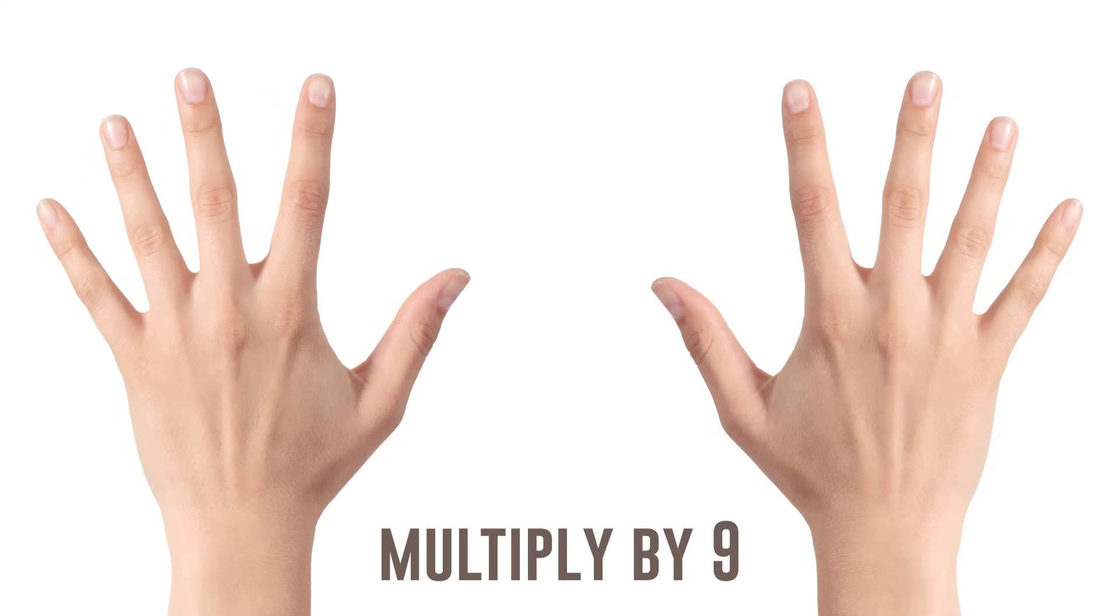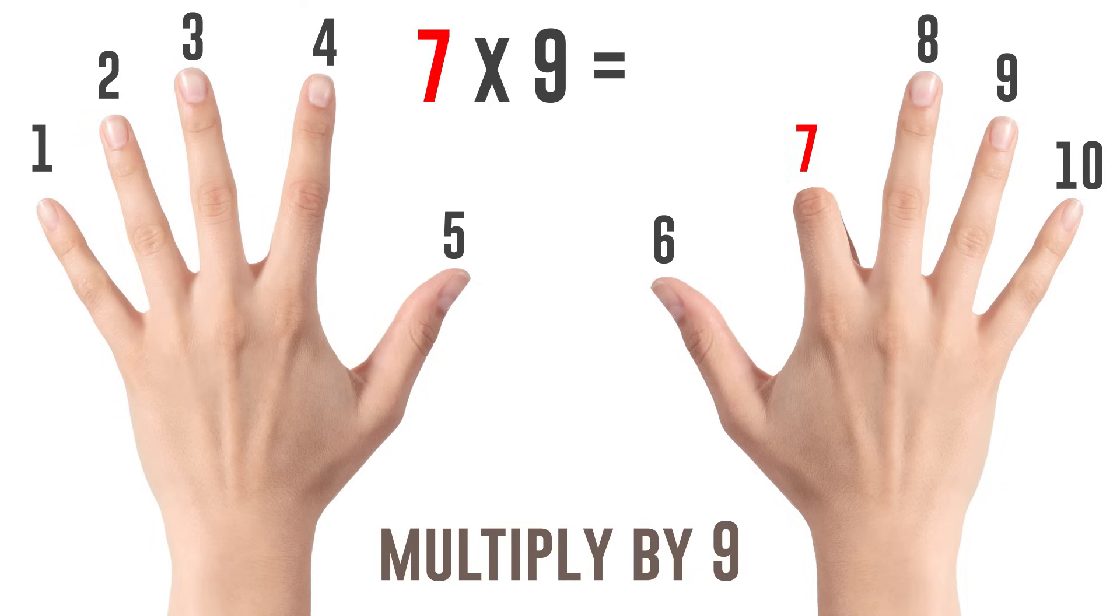Number 2: To multiply by 9, straighten your fingers and put your hands on a table with your palms down. To multiply any number by 9, just bend the corresponding finger. Fingers before means tens, after means units. For example, to multiply 7 by 9, bend the 7th finger. 6 fingers remain before and 3 after. We get the answer: 7 times 9 equals 63. Easy, right?